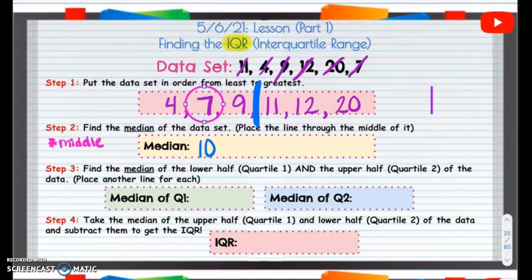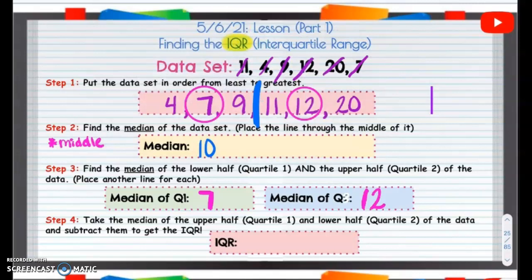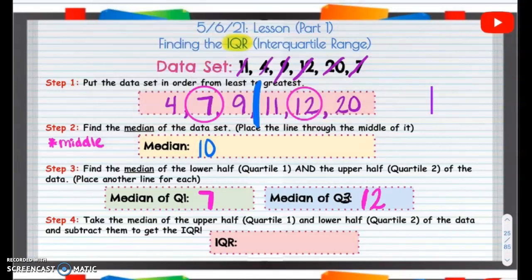And then, so the median of quartile 1, so that's going to be called quartile 1. So the median or middle of 11, 12, and 20 is going to be quartile, this should actually be quartile 3. My apologies there. So that is quartile 3. And now we, because quartile 2 is technically going to be the middle.